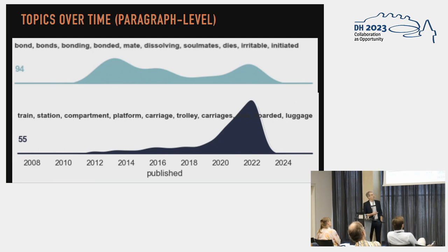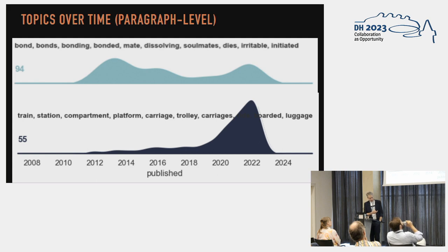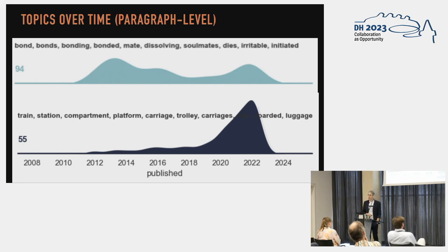Another thing we can do is look at topics over time. Here we are looking at the paragraph level because we want to detect innovation — how do people start to talk about characters in a different way? If you look at the paragraph level, you can detect slight changes in the words frequently associated with the name of a character. Here it's always English fan fiction about Harry Potter, a selection of stories where Hermione is the main character. One topic was more popular in 2012, then lost popularity, whereas another semantic field appeared very early but gained popularity only later on.